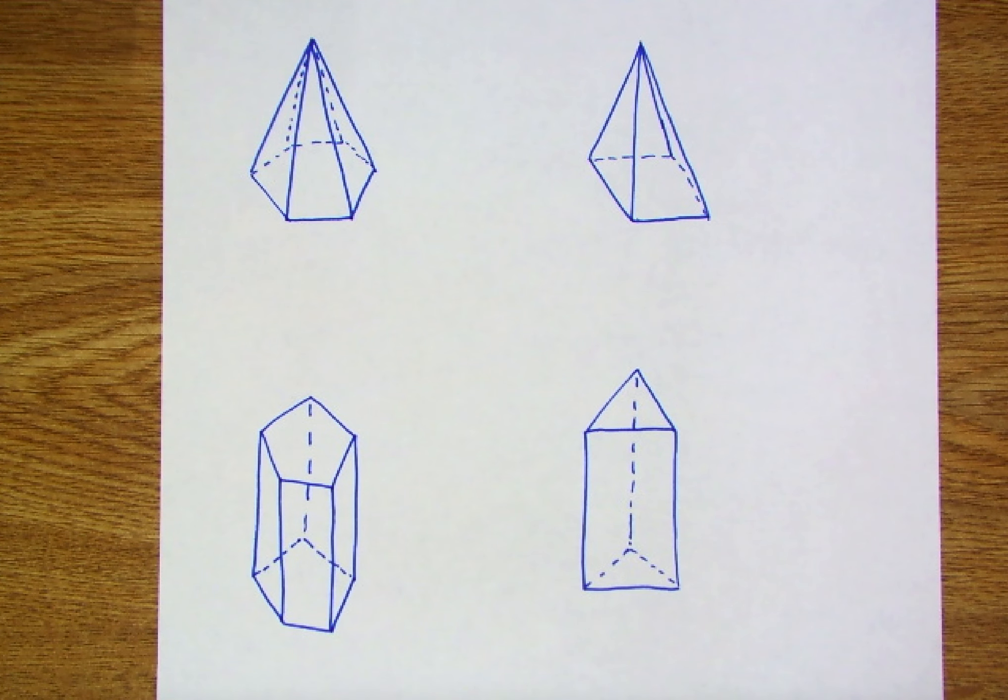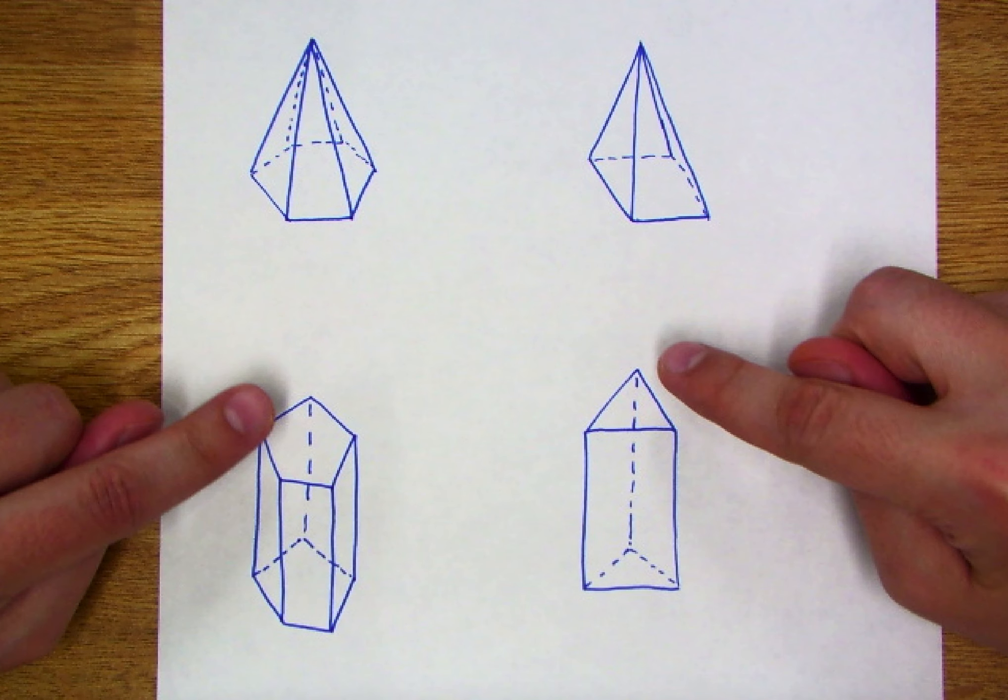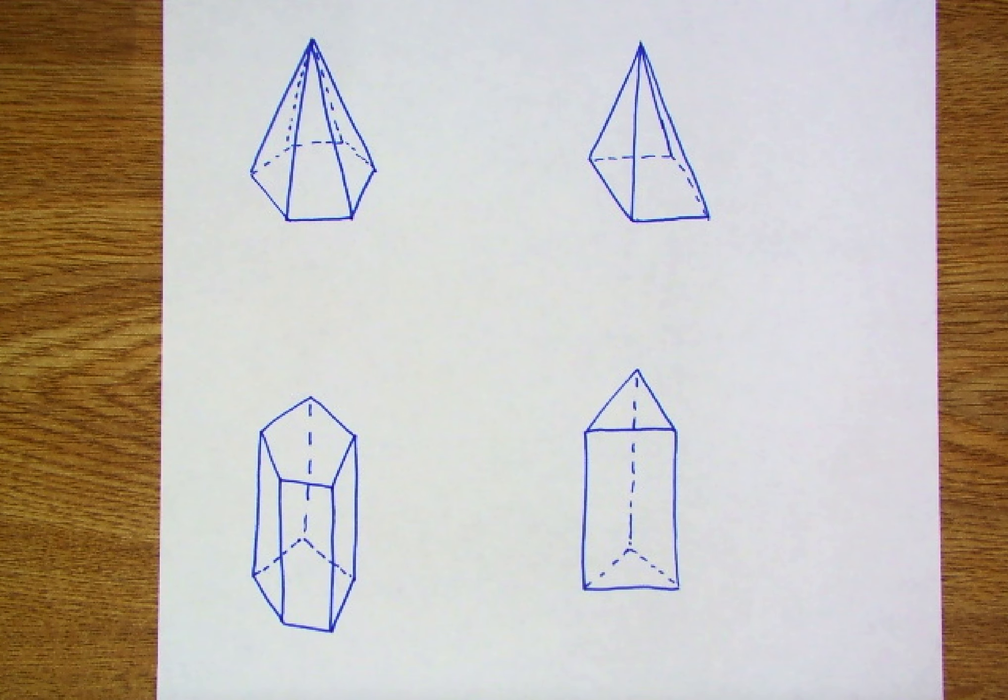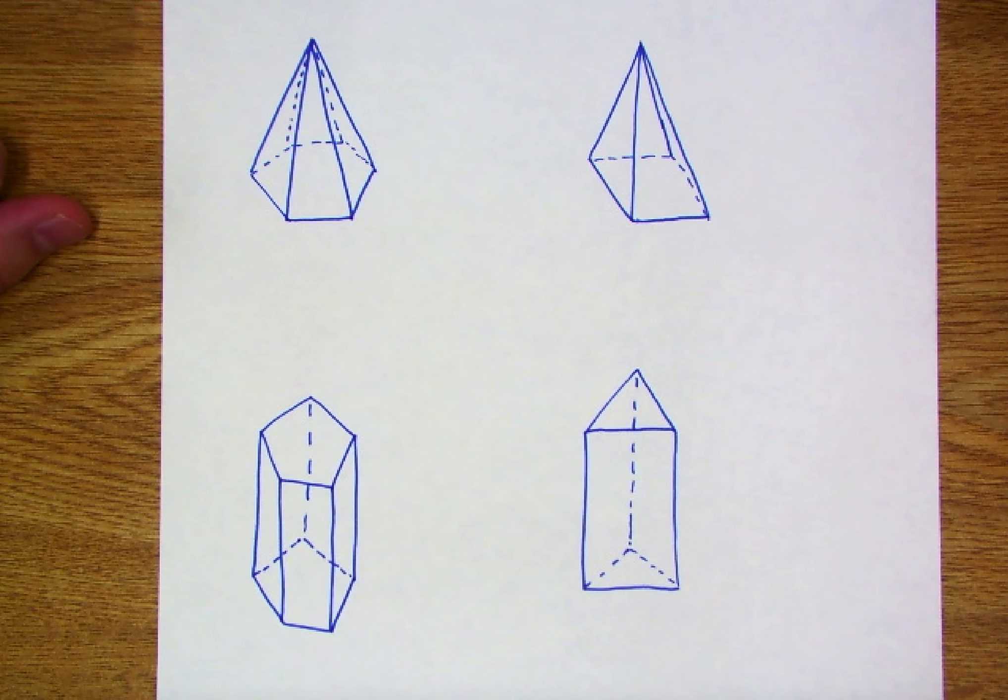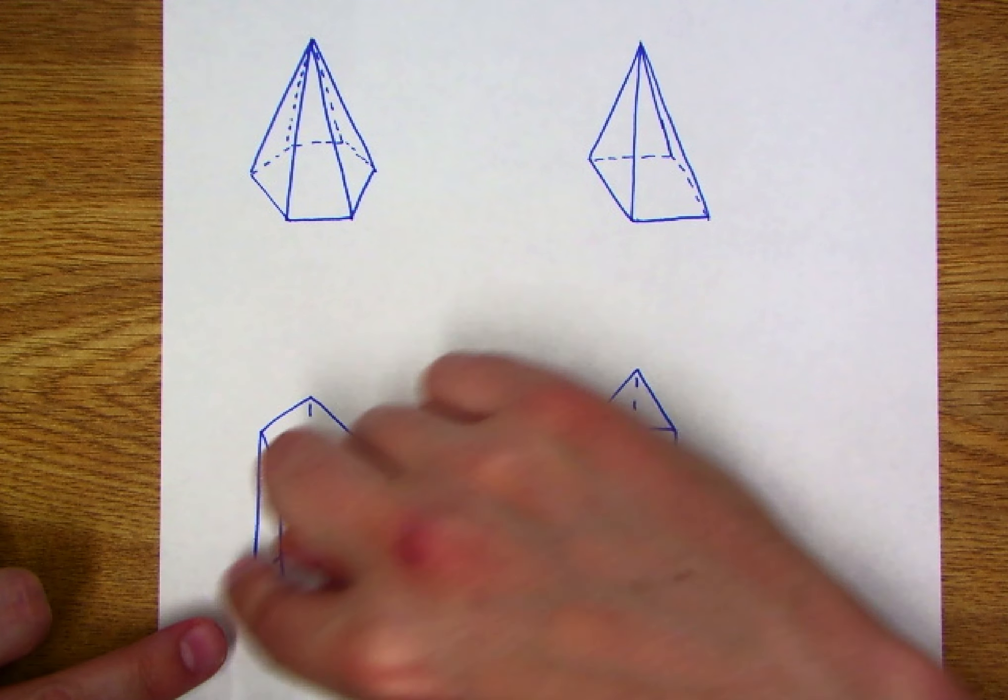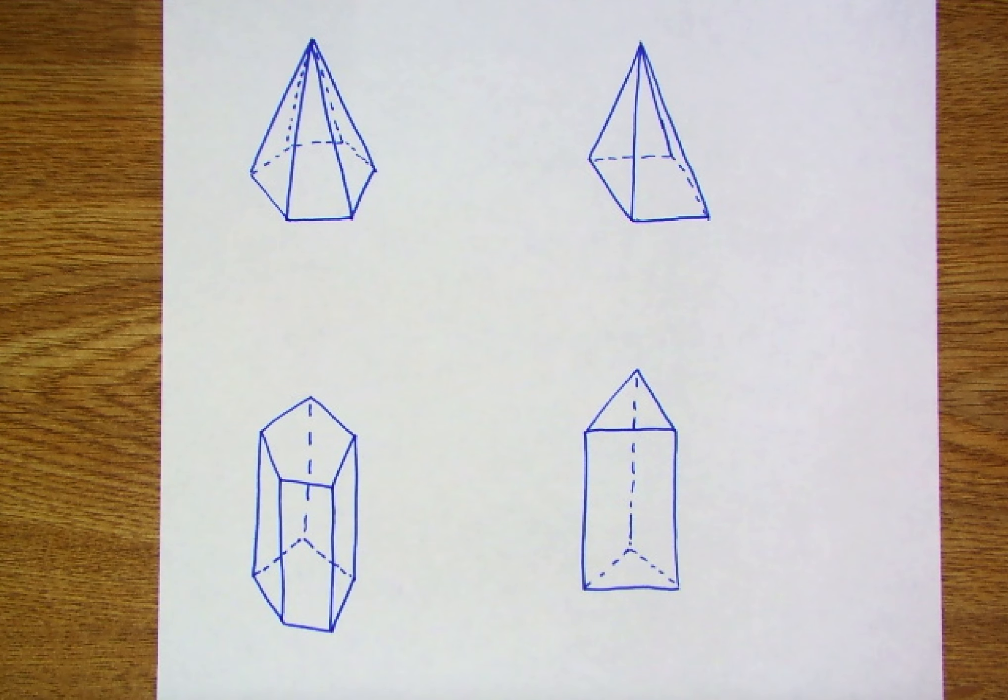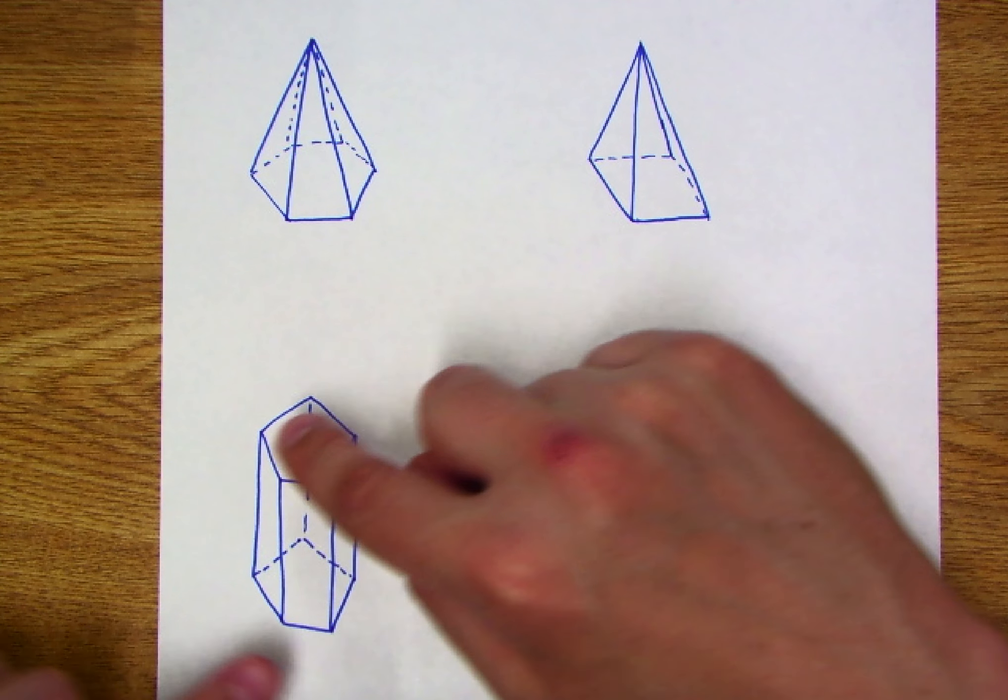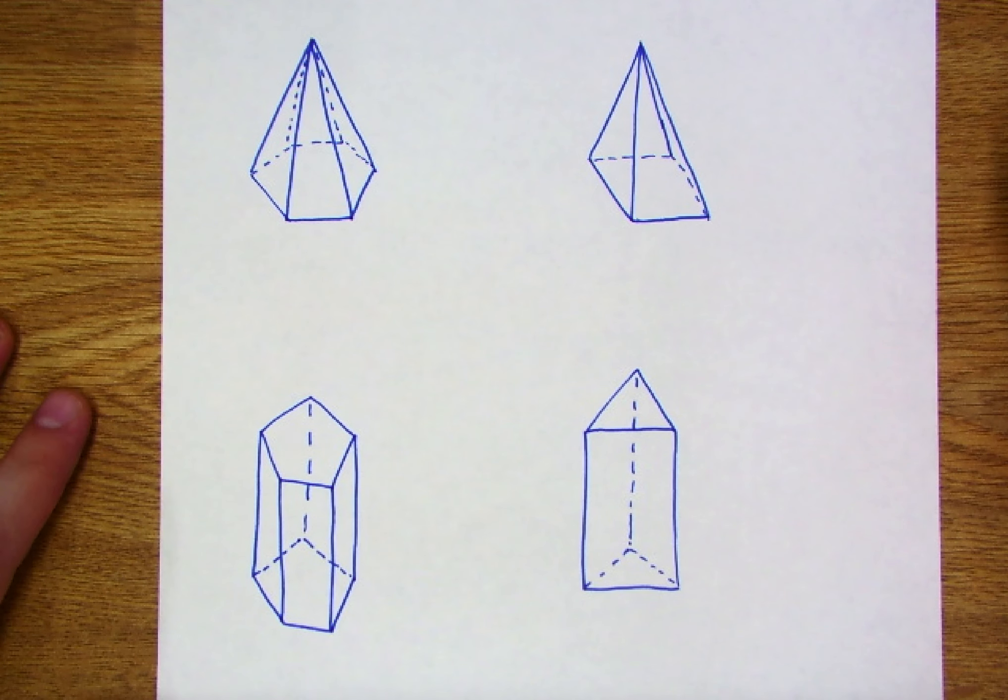Well, when we look at these four, you'll notice that the top two both kind of come to a point. But then some students may go, well wait a second, these also come to a point. So what do I mean when I'm talking about a point? What I mean is that the base is not repeated at the top of the figure.